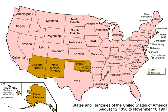TR added 50 wildlife refuges, five new national parks, and initiated the system of designating national monuments, such as the Devil's Tower National Monument.